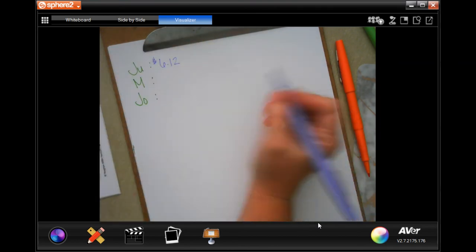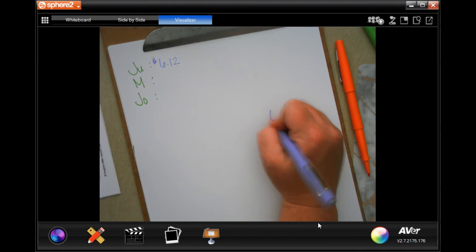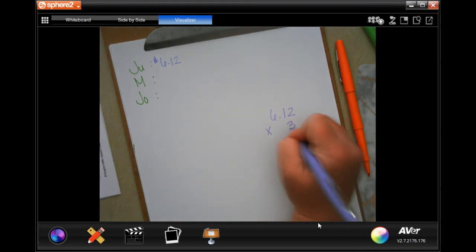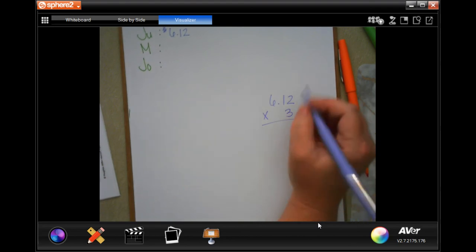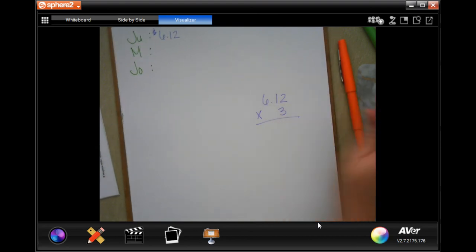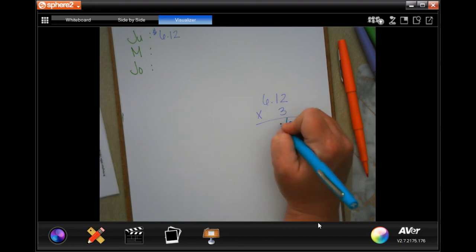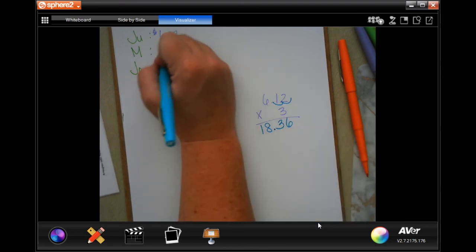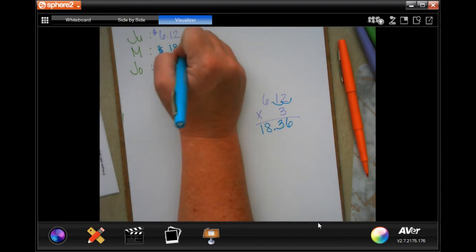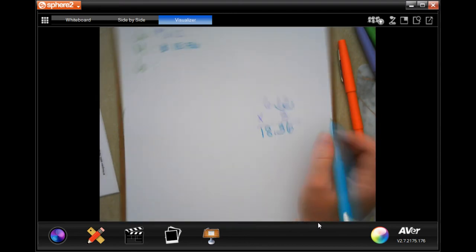Morgan spends three times that. So we're going to take $6.12, and we're going to multiply that by three. Because it says that she spent three times that. Three times two is six. Three times one is three. And three times six is 18. Go in one, two places. One, two places. So $18.36.